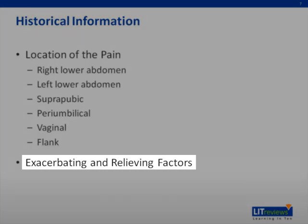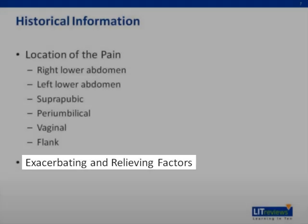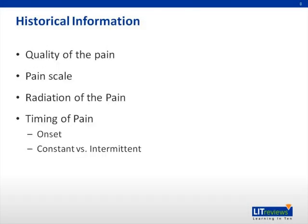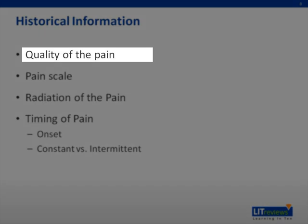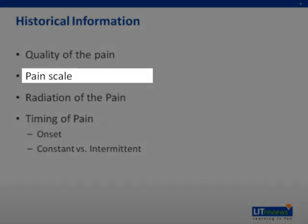Additionally, important relieving and exacerbating factors: what makes the pain better, what makes the pain worse, and knowing if they've taken anything that relieves the pain. The quality of the pain — is it sharp, dull, achy, or crampy? It's useful to use the pain scale from 0 to 10, asking how the pain was when it started compared to what it is presently.